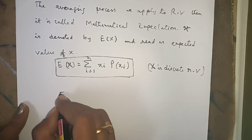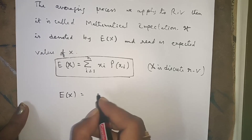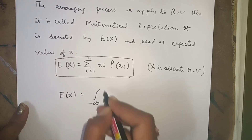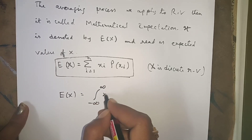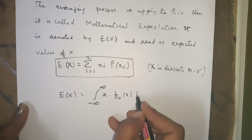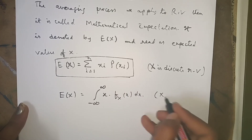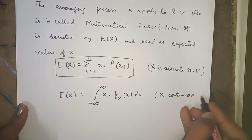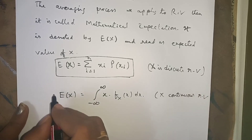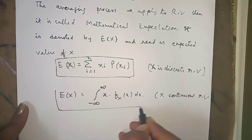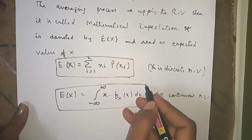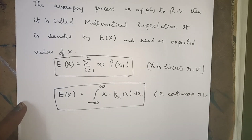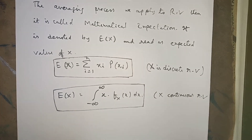In the case of a continuous random variable, E of x is equal to the integral from minus infinity to plus infinity of x into f_x of x dx. This is the formula for mathematical expectation when x is a continuous random variable.